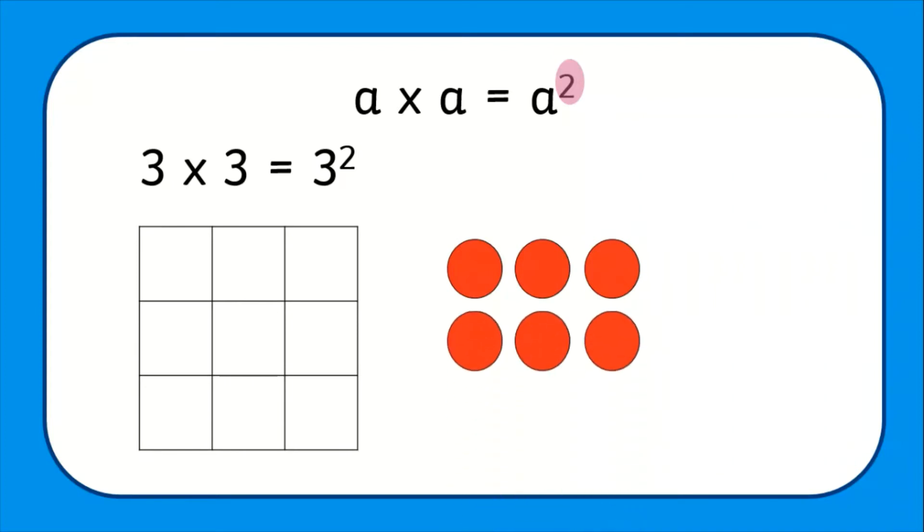One lot of 3, two lots of 3, three lots of 3. What do you notice? Yep, they are illustrated as squares. So looking at our representations or using our times table knowledge, what is 3 squared? Well done if you noticed, 3 multiplied by 3, 3 squared, is the same as 9.